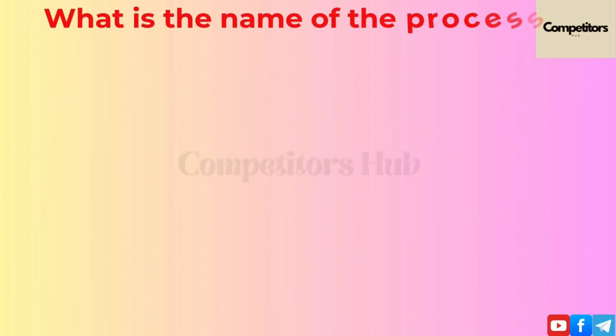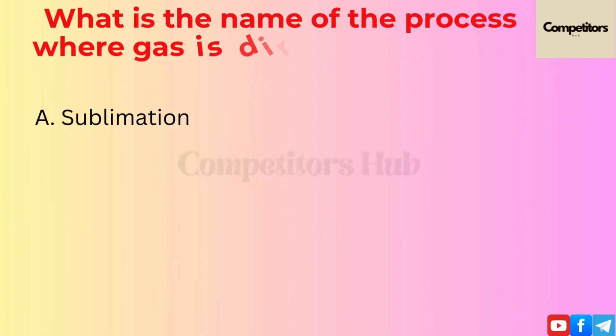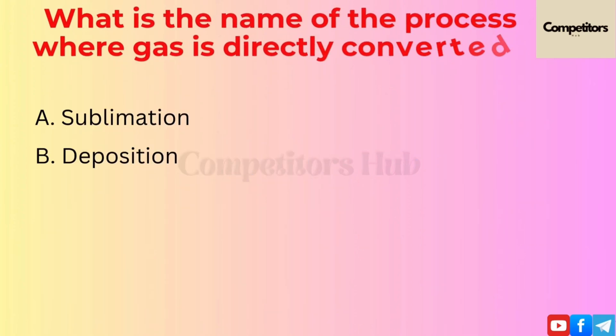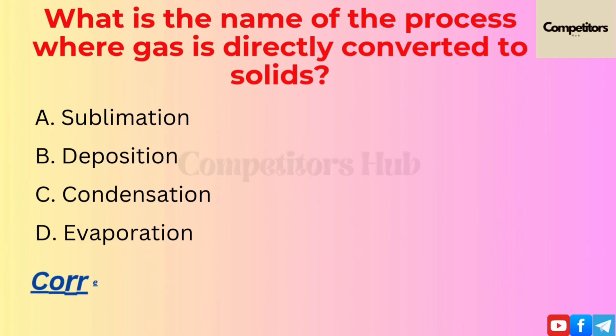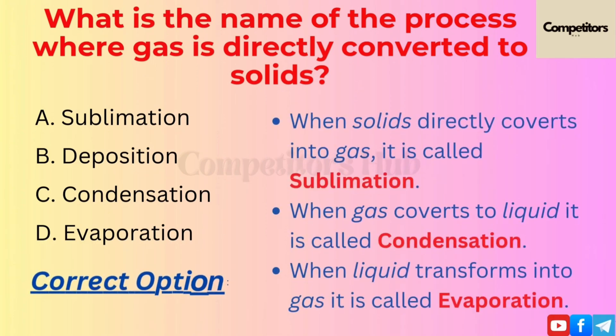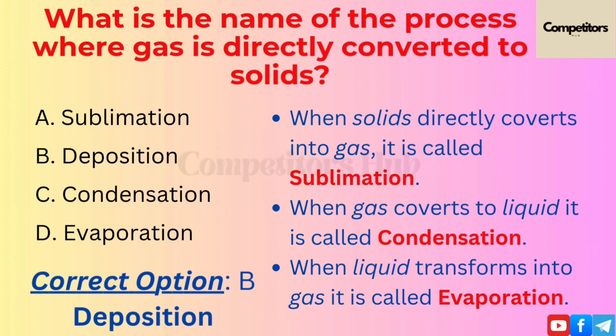The next question is: what is the name of the process where gas is directly converted to solid? Option A: Sublimation. Option B: Deposition. Option C: Condensation. Option D: Evaporation. The correct option is B, Deposition.